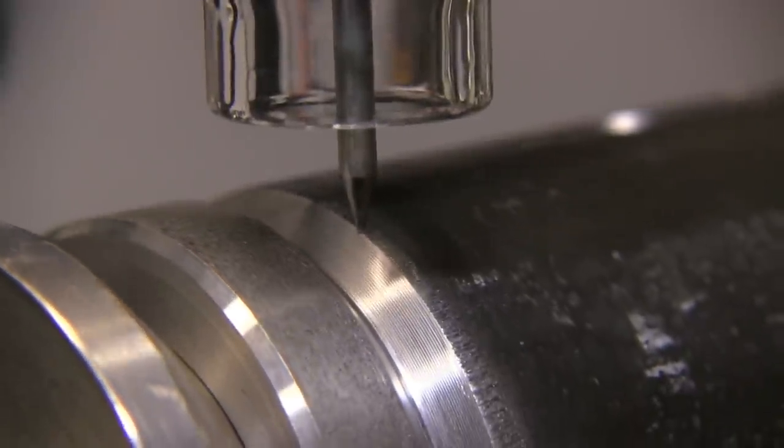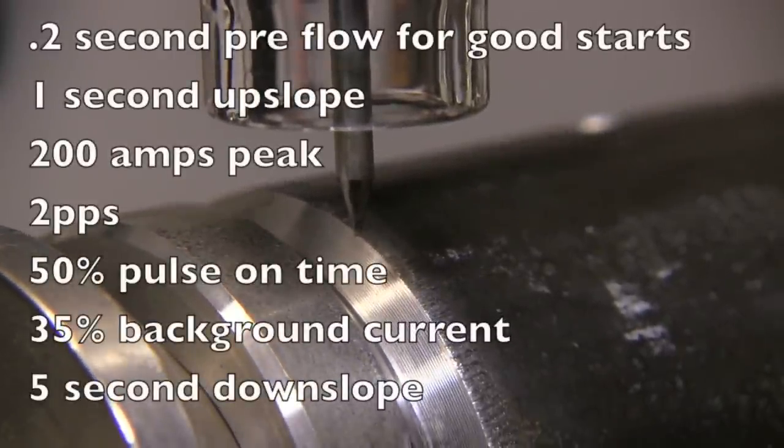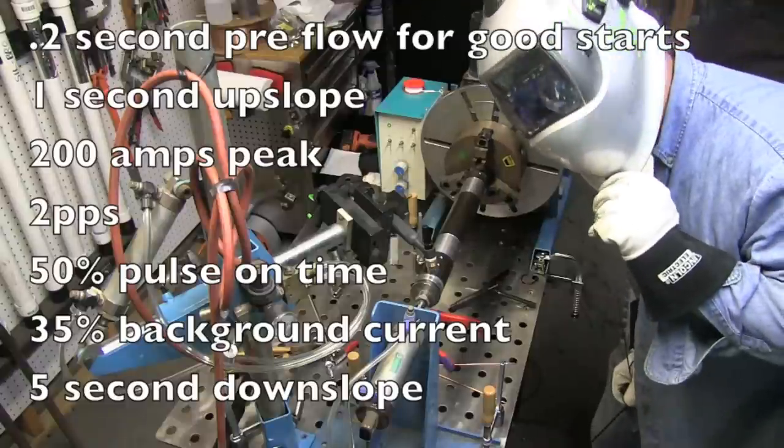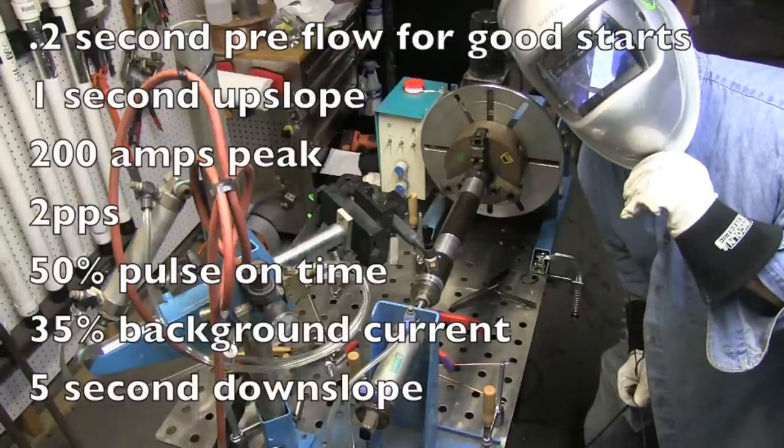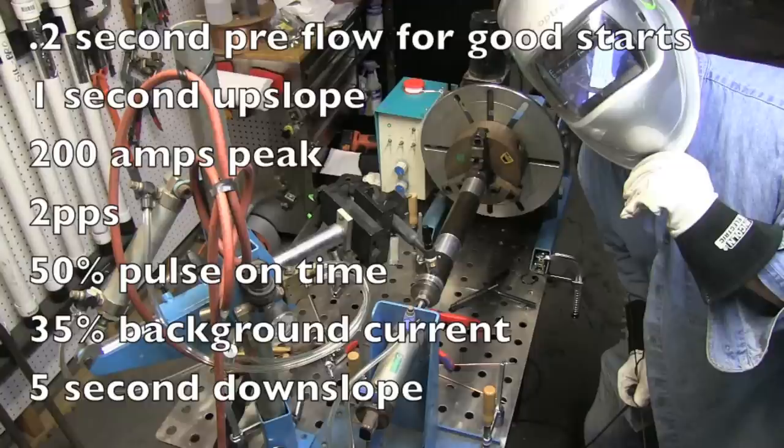Let's take a quick look at the settings I'm going to use for this. I'm using pulse at two pulses a second, so I've got a 0.2 second preflow on the purge to get a good arc start. Up slope of one second, peak amperage set at 200 amps, two pulses a second, pulse percentage on time 50%, background 35%, down slope five seconds.